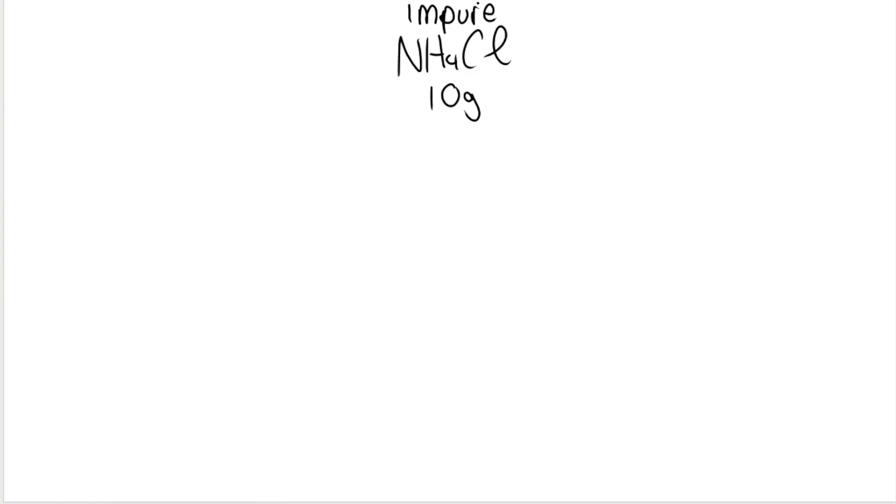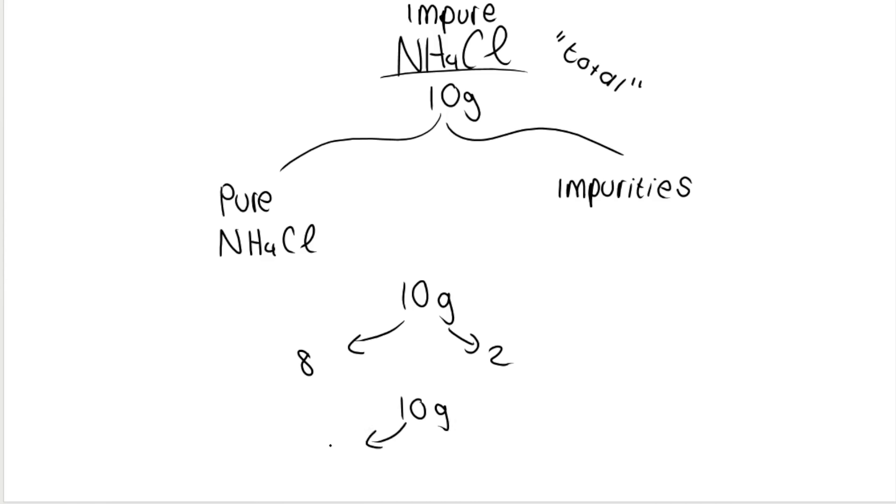I often like to think of impure as the total. Why? Because of this 10, some of the 10 is going to be pure ammonium chloride. And then the other bit, the leftover bit, is going to be what we call impurities. So impurities can be like organic matter or dirt or other substances. Basically, it's not this chemical compound. So, for example, if I've got 10 grams, maybe 8 of it is pure and 2 of it is impurities. Or maybe 9 of it is pure and 1 of it is impurities. But the total is impure.